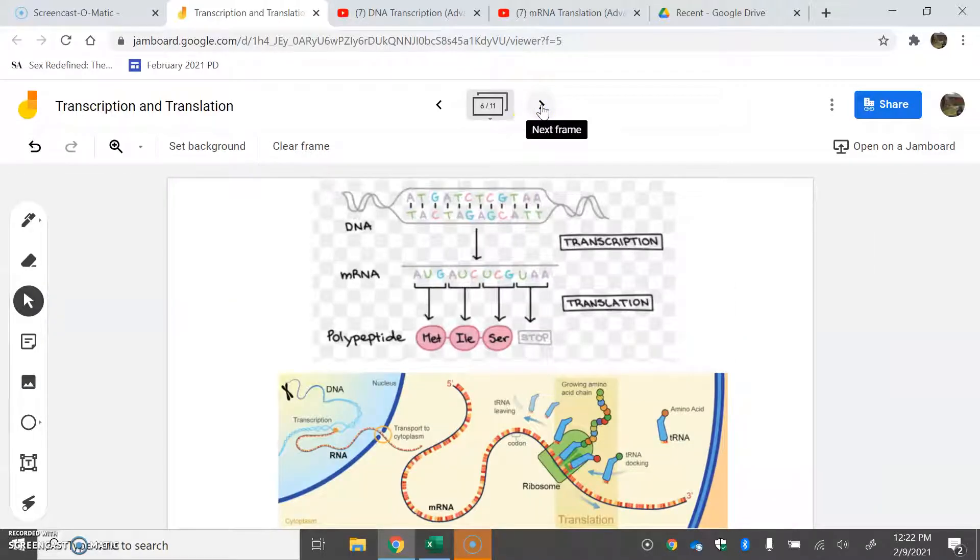So now we're moving into translation. We're going to focus on mRNA to polypeptide or protein. We have to remember that transcription happens inside the nucleus, and then that mRNA gets processed with a poly-A tail and 5' cap. Once it's ready, it can leave the nucleus through a pore and go to a ribosome.